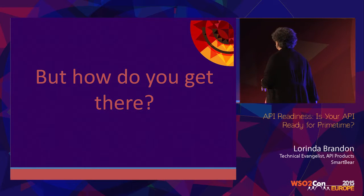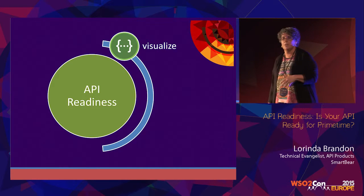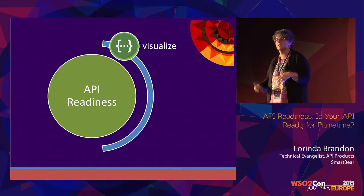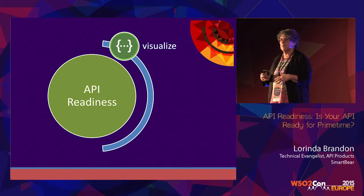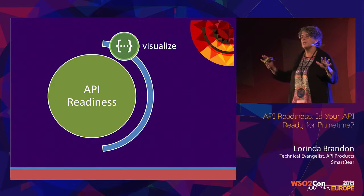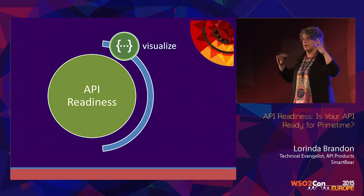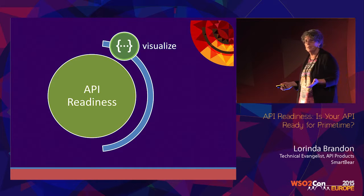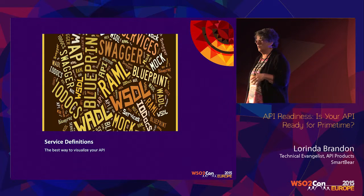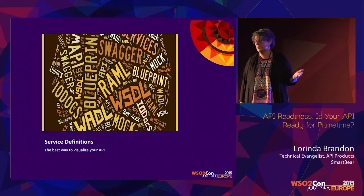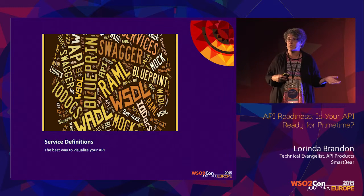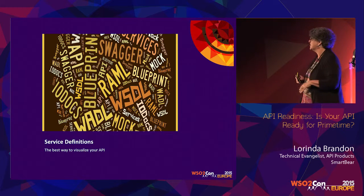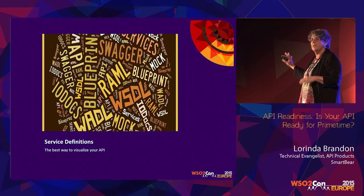So those are the keys to a successful API — how do you get there? First, you want to be able to visualize your API. When we talk about visualizing APIs, a lot of times we're referring to the documentation. Many of you who provide APIs have probably had the conversations about how to describe an API. WSO2 is a big proponent of Swagger, and there are a lot of choices — Swagger, API Blueprint, WADL or WSDL if you're using SOAP APIs, because not everybody's using REST.